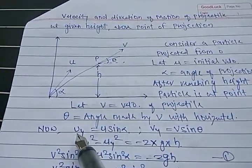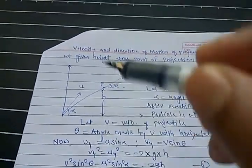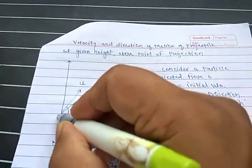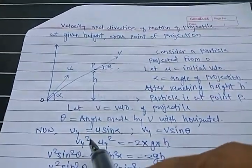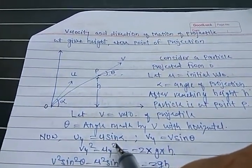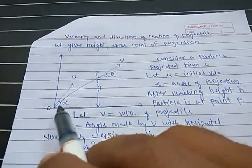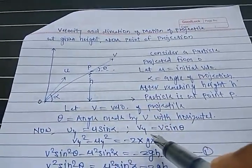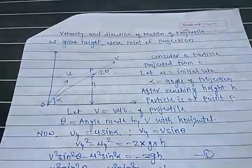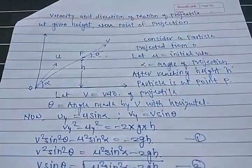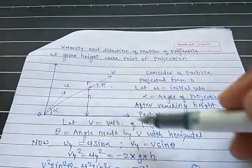The vertical component of velocity at point O — the beginning point — is Uy = U sin alpha, because alpha is the angle of projection. The vertical component of velocity at point P is Vy = V sin theta.